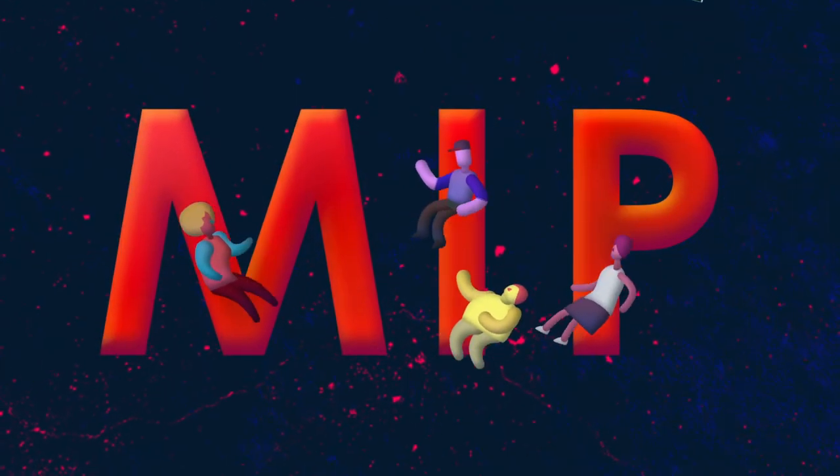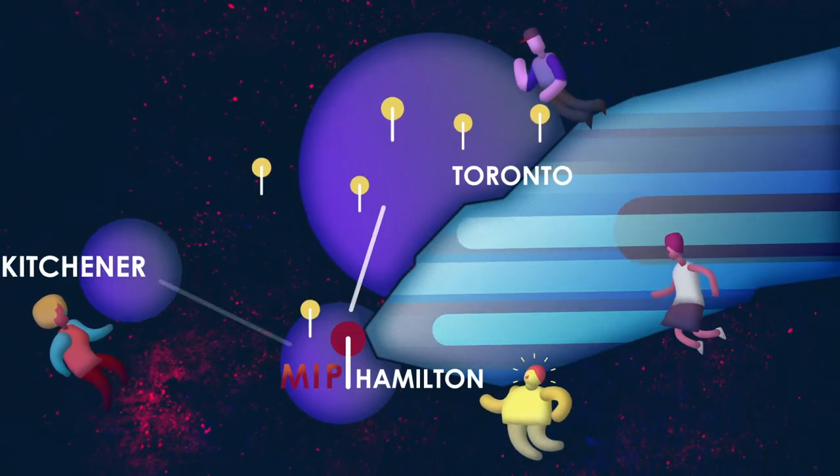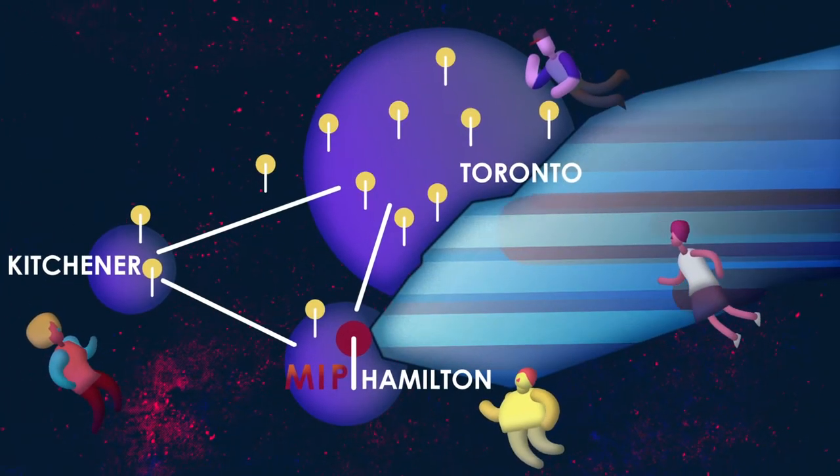McMaster Innovation Park is how. MIP is Canada's premier research and innovation park, strategically located along the Hamilton-Toronto Innovation Corridor.